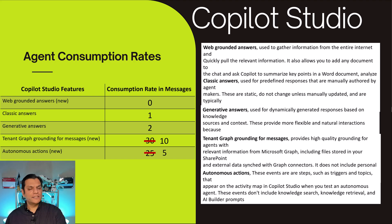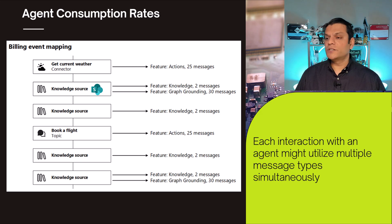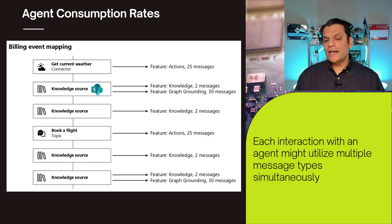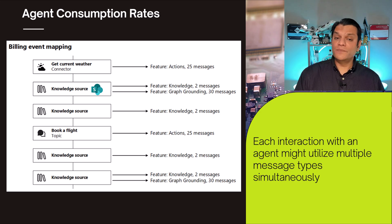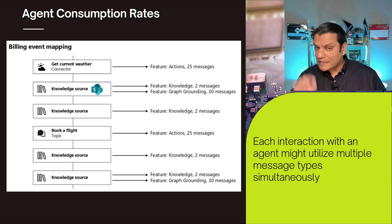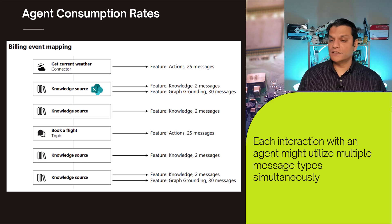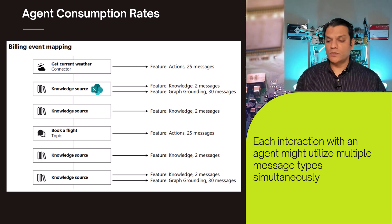Let me take you through a scenario I covered in the previous video. For agent consumption rates, imagine you've built an agent to help book a flight. It gets information about your location from one knowledge source, checks the weather at the destination, and determines which flight you should take. For each of those actions there is a different message consumption — getting current weather consumed 25 messages, and getting information from a SharePoint knowledge source consumed 30 messages, and so on.